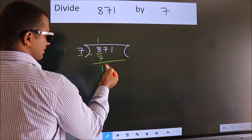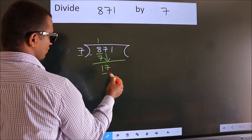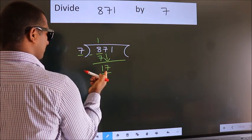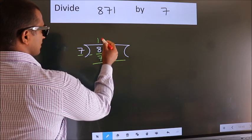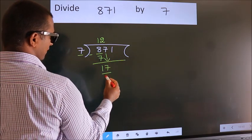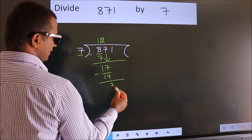After this, bring down the beside number. So 7 down, making 17. A number close to 17 in the 7 table is 7 times 2 equals 14. Now we subtract. We get 3.